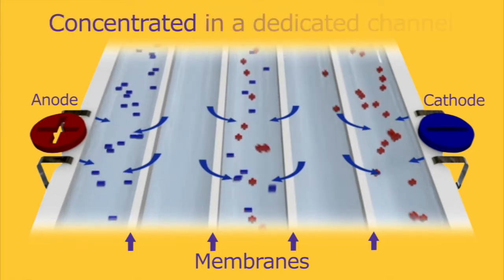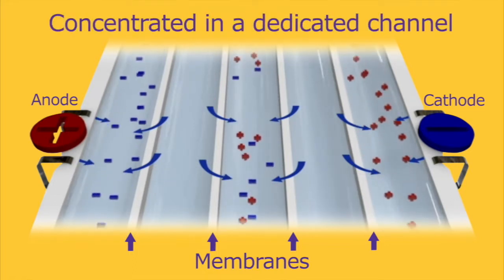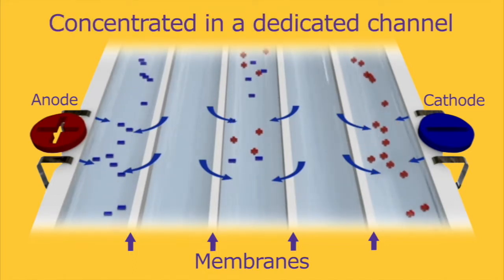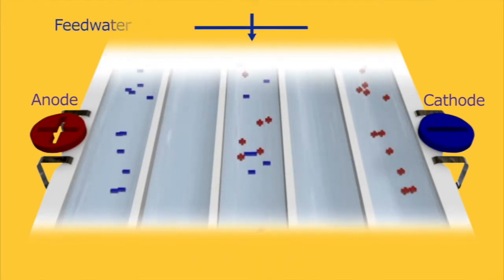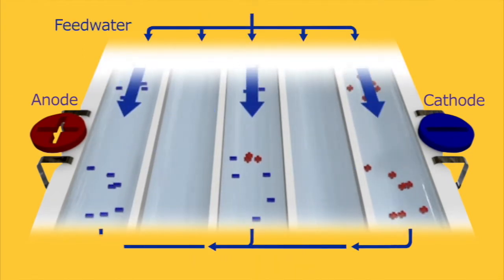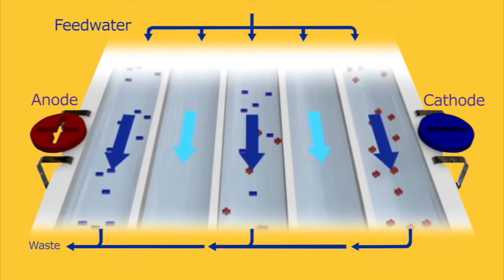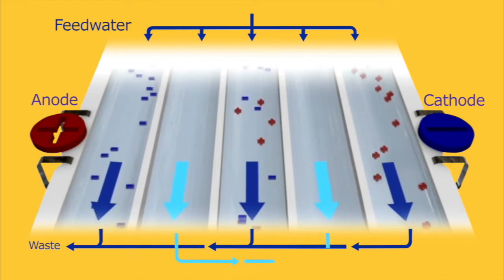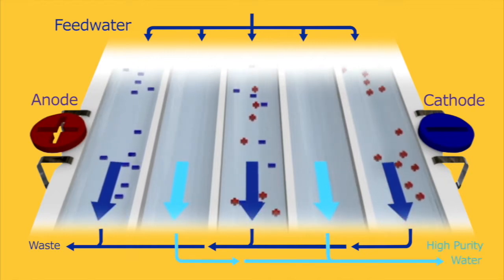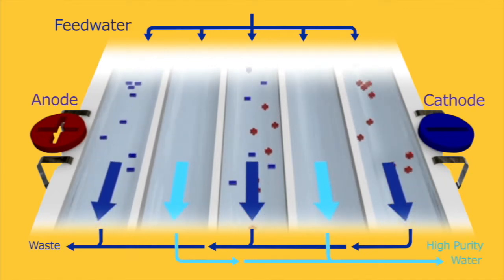Water molecules are left behind, resulting in a concentration of ions in a dedicated channel. The ions are collected and removed in a small waste stream, whereas the water molecules are gathered into a deionized path flow. The resulting purified water is then available for your applications.